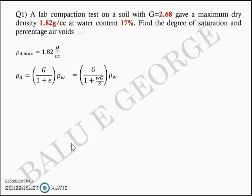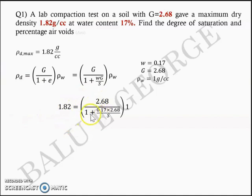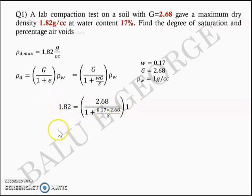Water content is given as 17% or 0.17, specific gravity G is 2.68, and rho_w is taken as 1 g/cc. The left-hand side rho_d is 1.82 g/cc. So: 1.82 = 2.68 / (1 + (0.17 × 2.68 / S)) × 1. Solving this equation, the unknown value S turns out to be 0.94 or 94%. That is the degree of saturation.